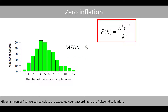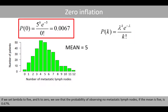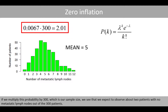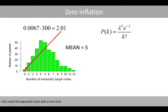Given a mean of 5, we can calculate the expected count according to the Poisson distribution. If we set lambda to 5 and k to 0, we see that the probability of observing no metastatic lymph nodes if the mean is 5 is 0.67%. If we multiply this probability by 300, which is our sample size, we see that we expect to observe about two patients with no metastatic lymph nodes out of the 300 patients. Let's mark the expected count with a red circle.